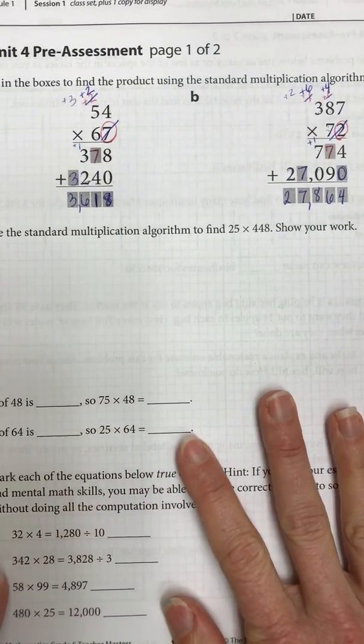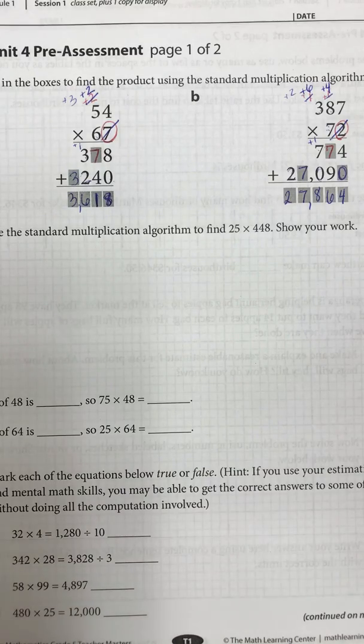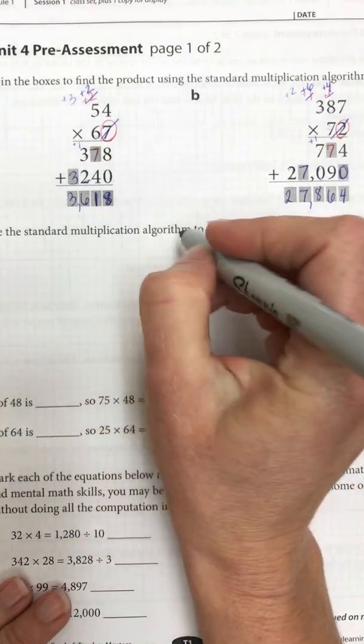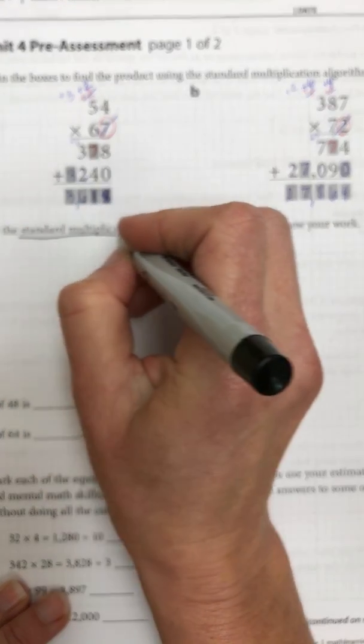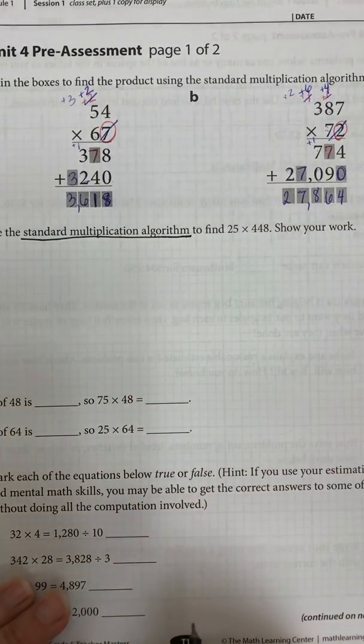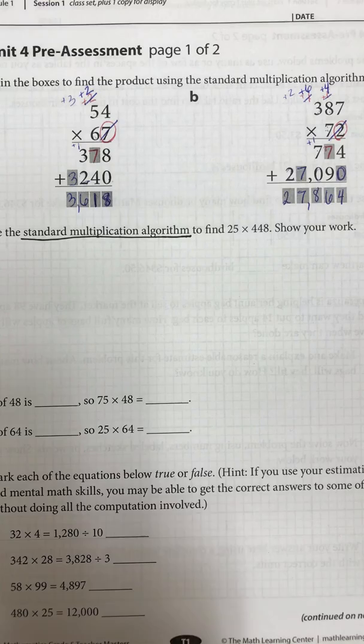Okay, we're going to do the same thing on this one. The next one says use standard algorithm to find 25 times 448. So it does say standard algorithm, so I can't use any other strategy if I want full credit.